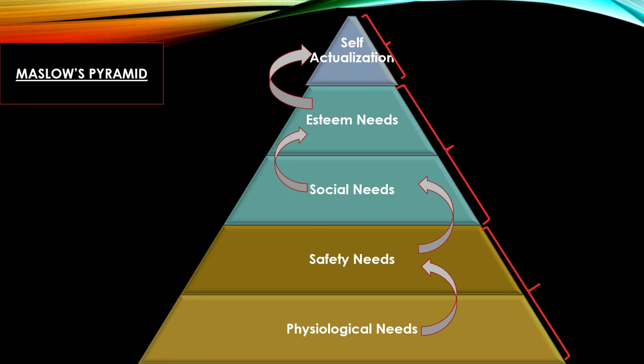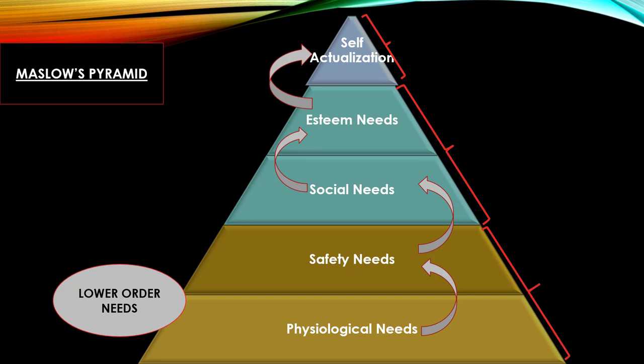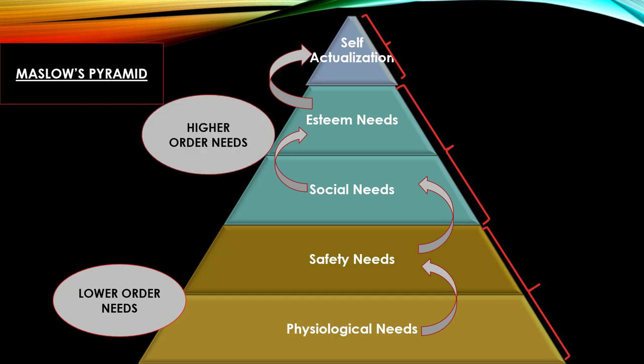Maslow's pyramid shows five levels of needs. The lowest order need is physiological needs, which must be satisfied first. Second is safety needs, third is social needs, then esteem needs, and finally self-actualization needs. As per Maslow, physiological needs and safety needs are lower order needs, and the rest — social needs, esteem needs, and self-actualization needs — are higher order needs.